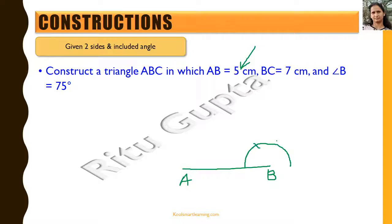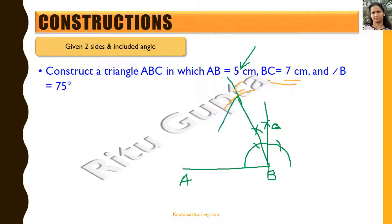We know how to draw 90 degrees by bisecting the angle between 60 and 120. We draw the angle bisector of 60 and 90 to get 75 degrees and extend this line. With a 7 cm radius and B as center, we draw an arc intersecting this line at point C, since BC equals 7 cm. We join A and C to get a unique triangle satisfying the SAS criteria.